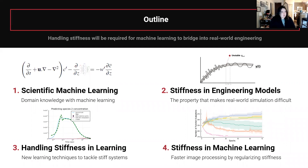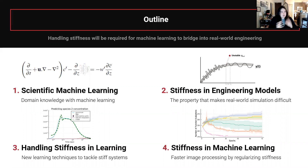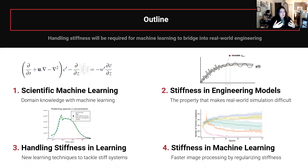I'll also cover something that's not quite SciML but is an interesting detail: you can use physical properties of systems to actually improve machine learning itself, and show that you can regularize stiffness out of machine learning to get better image processing models. This goes full circle and shows that machine learning and physical properties like stiffness are really two intertwined quantities that need to be understood together.